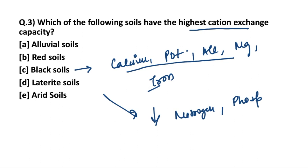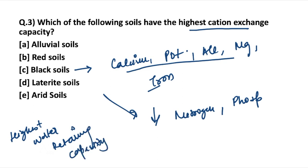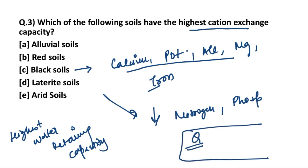Apart from the highest cation exchange capacity, other features of black soil include the highest water retaining capacity as well. There comes another related question: why is the colour of black soil black? Mention in the comments which nutrients present in black soil make it black in colour.